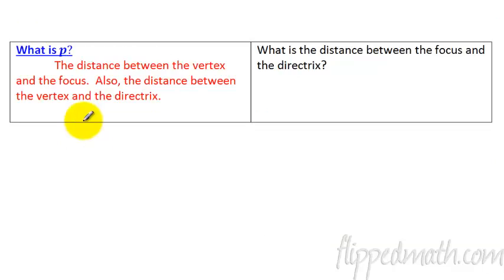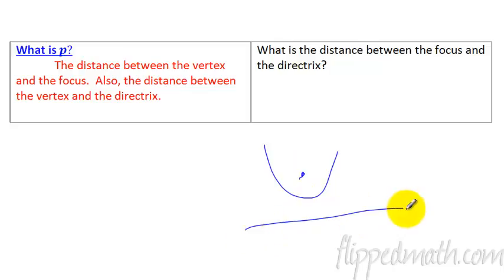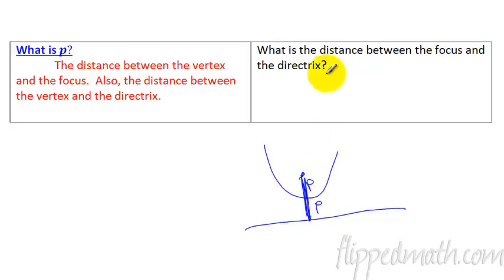And what is p? It's the distance between the vertex and the focus. It's also the distance between the vertex and the directrix. What is the distance between the focus and the directrix? Well, if it's p there and p there, the entire distance is 2p.